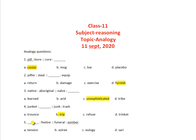Question 5: blank, festive, funeral, sombre. A sorry is described as festive, and a funeral is described as sombre. The correct answer is B part.